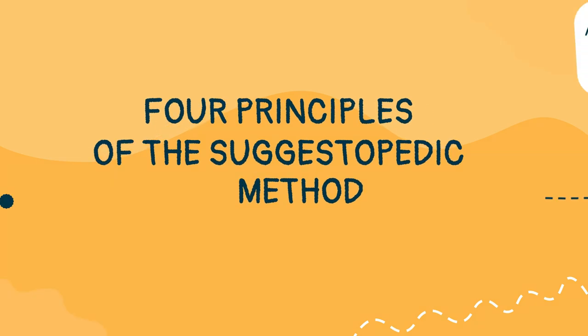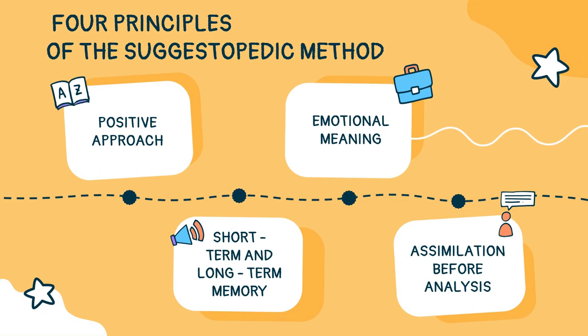Let me discuss the four principles of Suggestopedia. The first one is positive approach — everything must be positive, including mistakes. When students make mistakes, they actually learn something new from it. The next one is short-term and long-term memory, where students do not forget what was told to them after four days. Third is emotional meaning — people seem to remember more easily when emotions are given to the information, which is why students will be given new identities so they feel relaxed and self-confident. The last one is assimilation before analysis — once students assimilate, they have greater pleasure and facility.